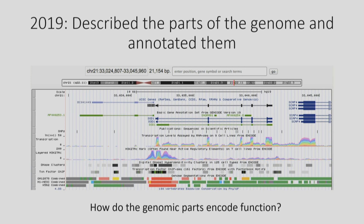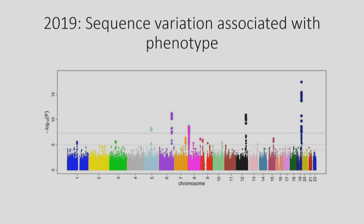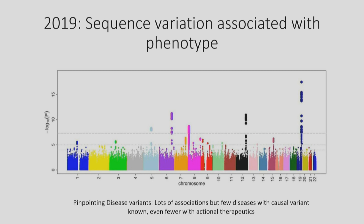How do we get particular cell types from this sequence information? In terms of understanding how the genome not only encodes normal function but how changes in this affect phenotype, we've used a vast array of techniques to accumulate sequence variation and associate it with phenotype. But pinpointing disease variants is still a challenge — we have all of these associations, but few diseases with a known causal variant, and even fewer actionable therapeutics.